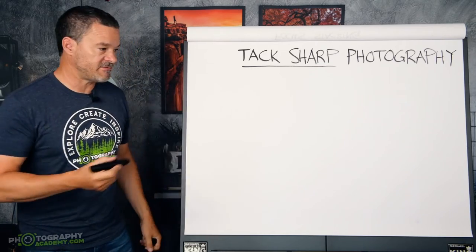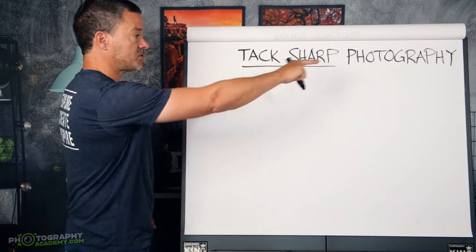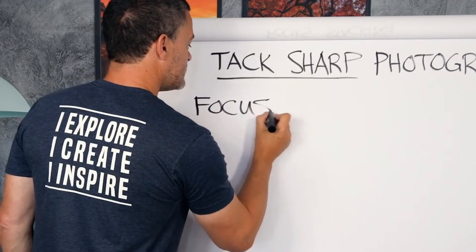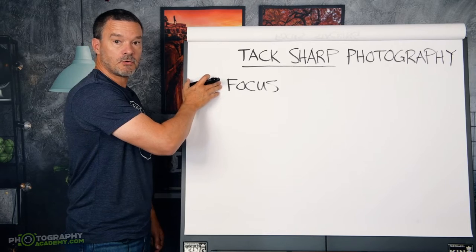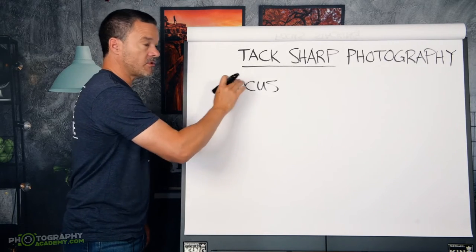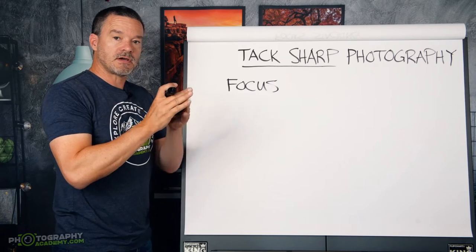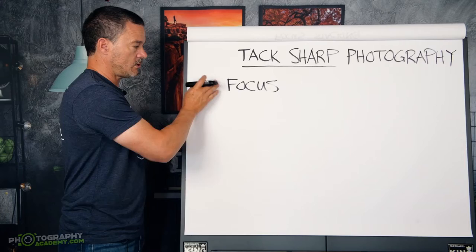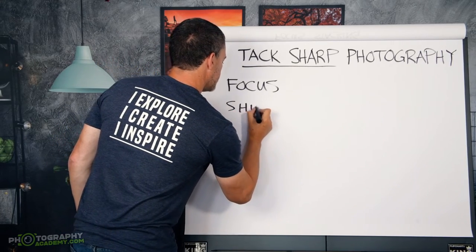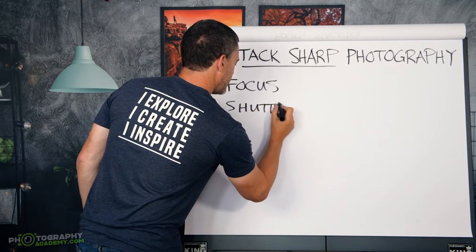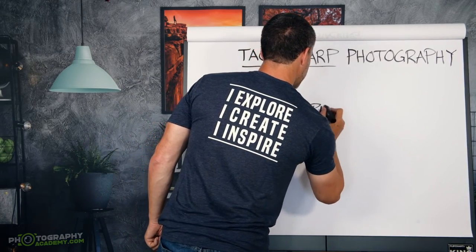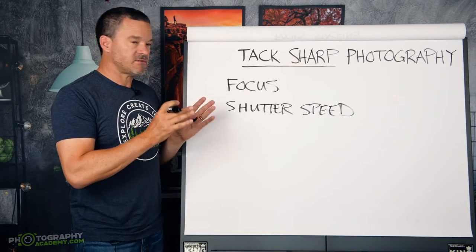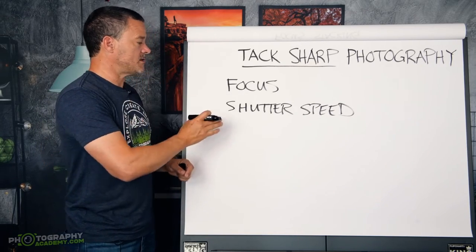Your photo won't be usable for anything except maybe a very small Instagram photo. So when we talk about tack sharp photos, there are two things I'm going to be talking about. The first one is focus — this is 50% of the equation to getting a tack sharp photo. It's about having the right focus, focusing on the right area, and focusing fast enough on a moving subject. The second aspect of your camera settings is shutter speed.